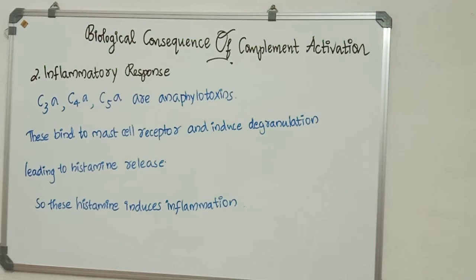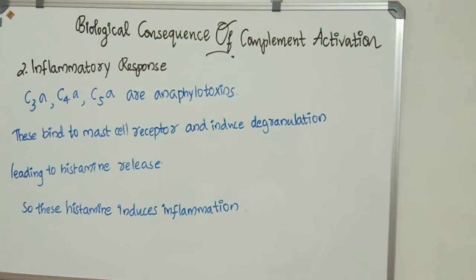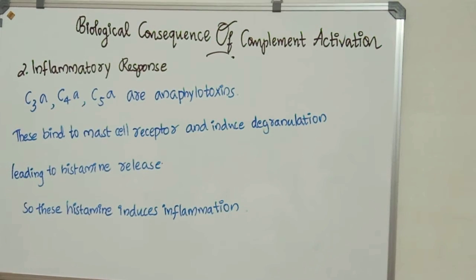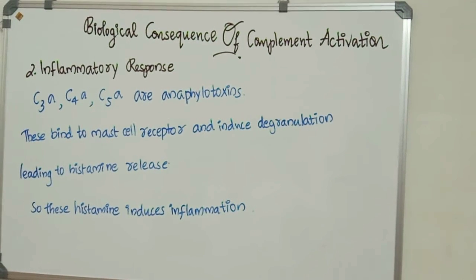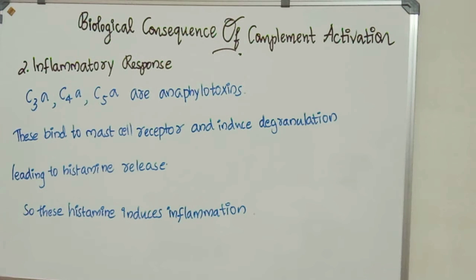Number 2: Inflammatory Response. C3a, C4a, and C5a are known as anaphylotoxins. When we look at the role of C3a and C4a, these act as anaphylotoxins, meaning they help in binding with mast cell receptors. On mast cell receptor binding, they induce degranulation leading to histamine release. When histamine is released, it induces inflammation.